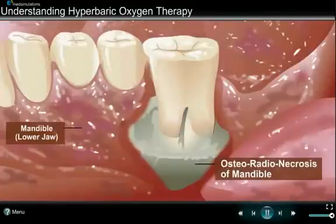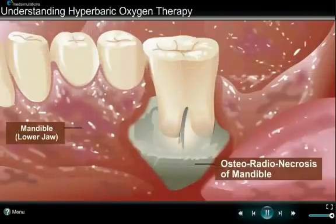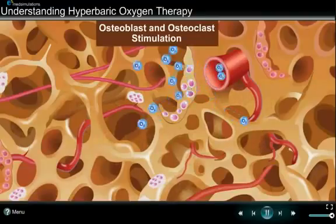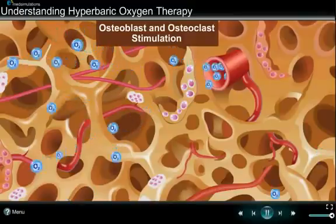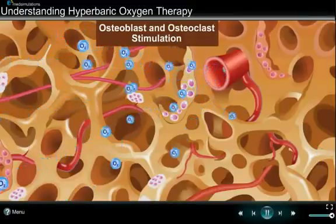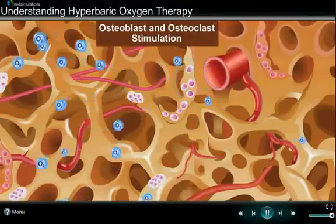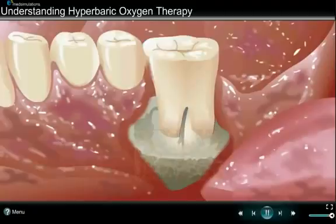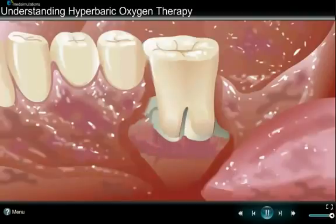Radiation injuries may affect bone or other soft tissue. Osteoradionecrosis is one such injury that occurs most commonly in the lower jaw. HBOT increases oxygen concentration in the blood, stimulating new bone-forming cells in the affected area. It also stimulates stem cells — the body's master cells that have the ability to form different cell types — to help heal this condition.